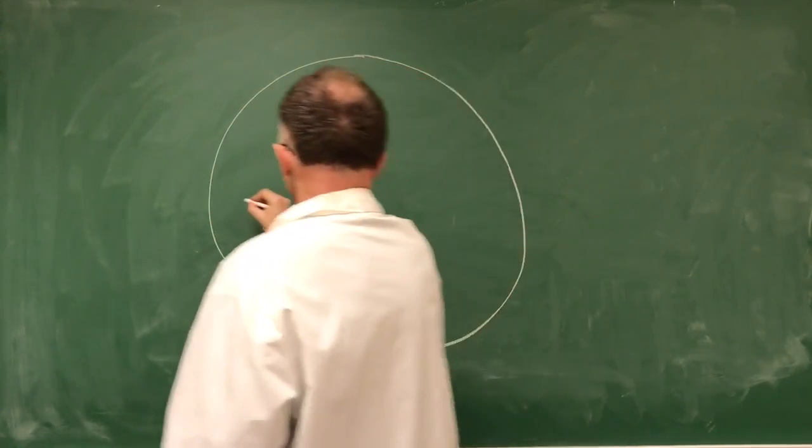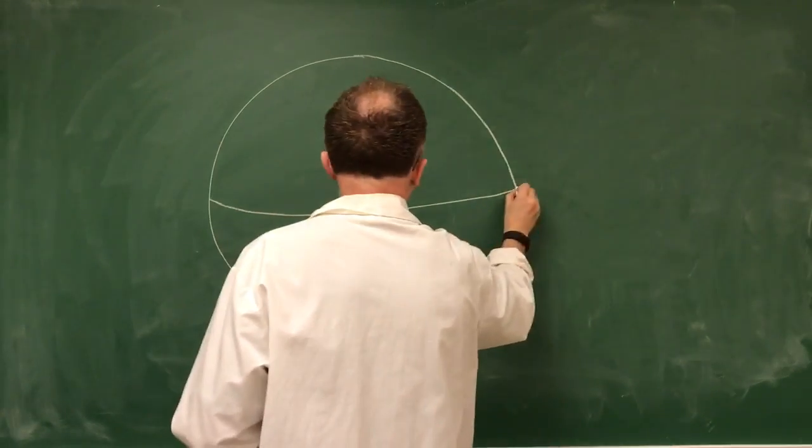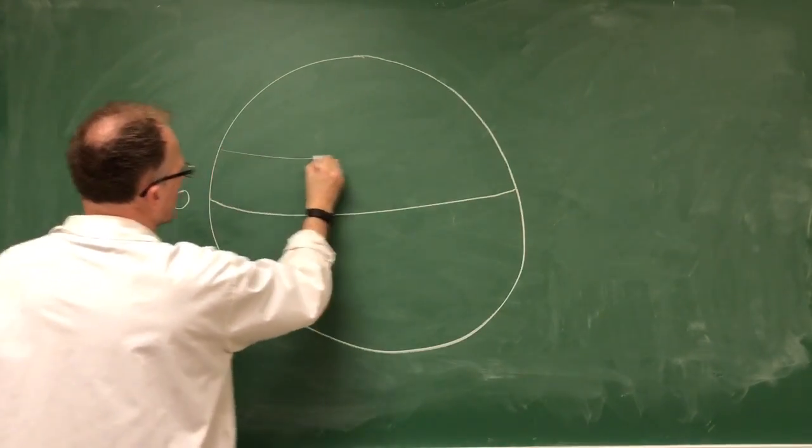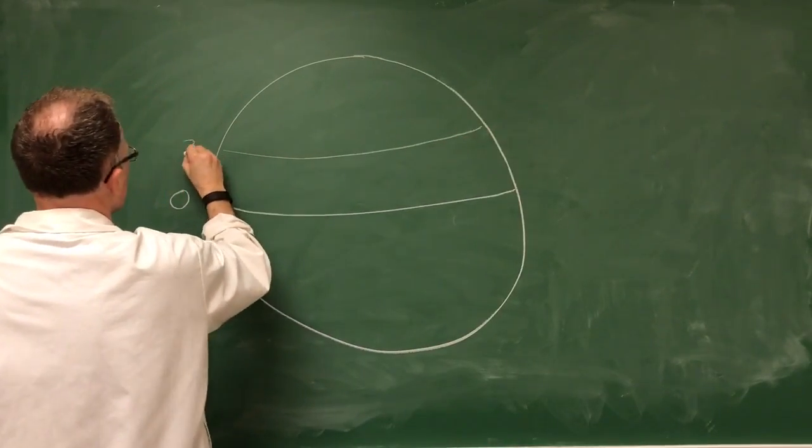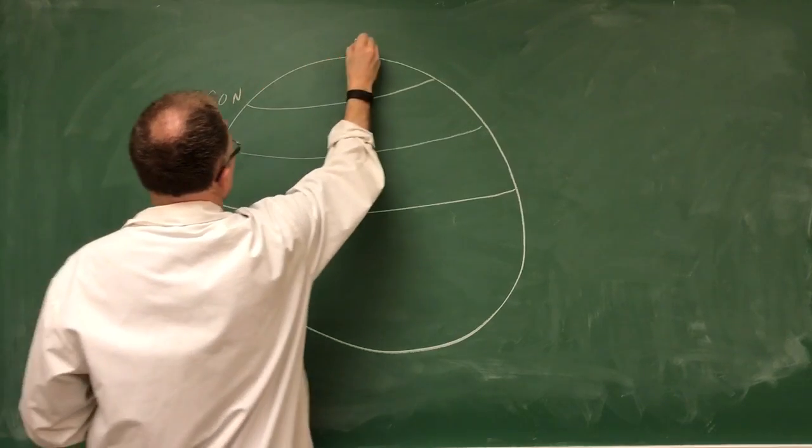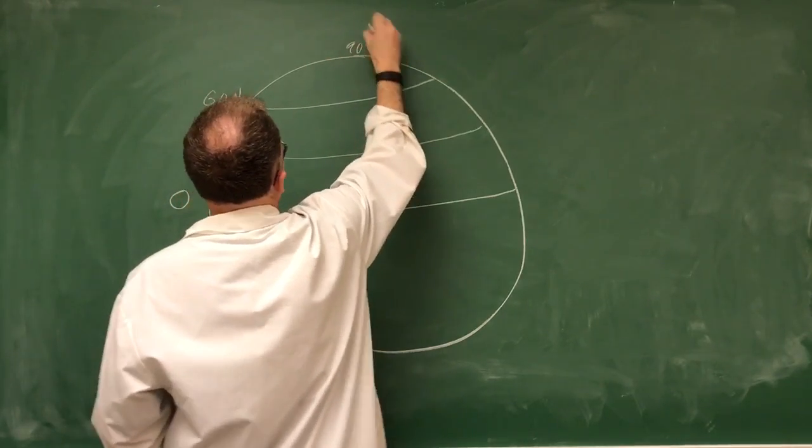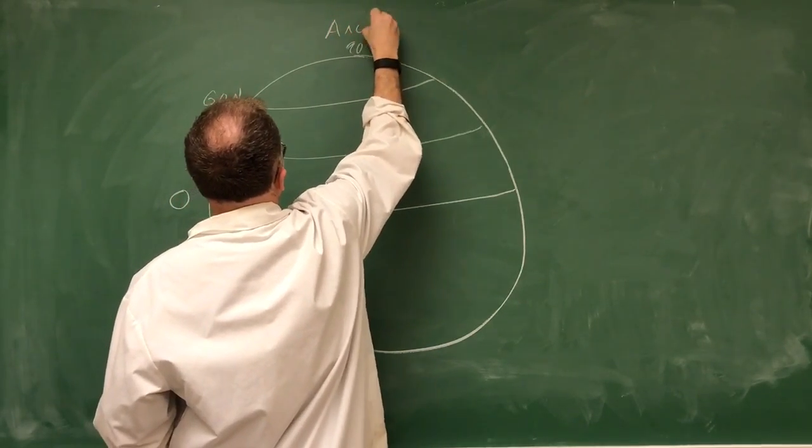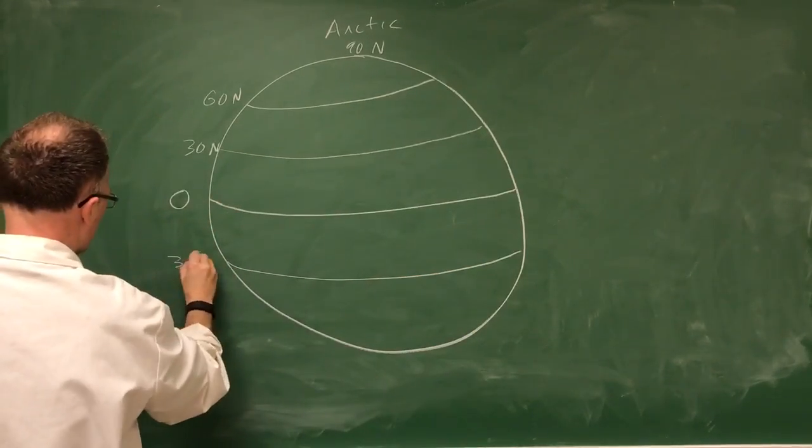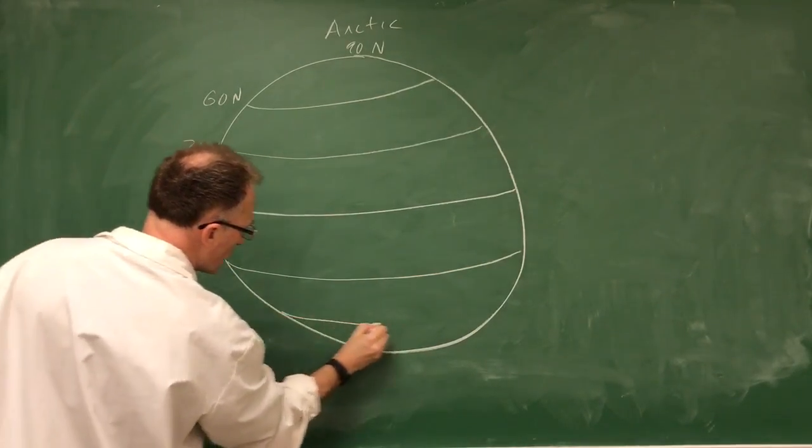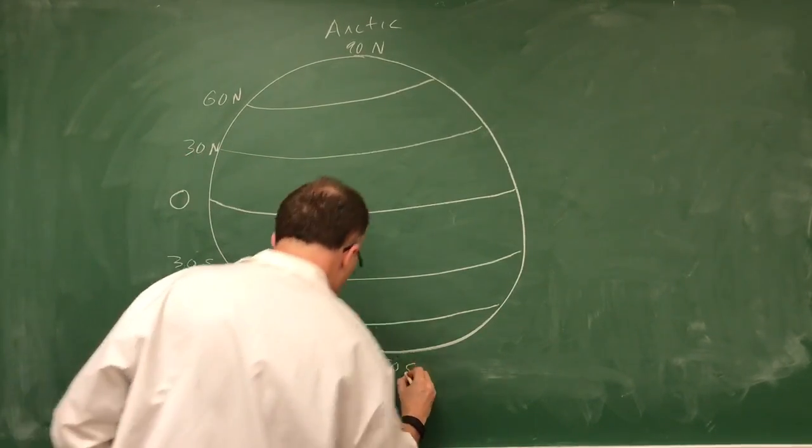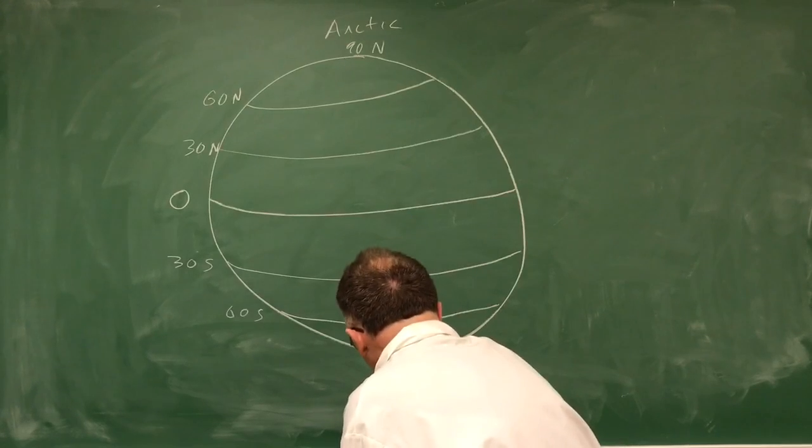So this is looking at the Earth, this is the zero degree equatorial line. I'll draw the 30 degree north, 60 degree north, and this is 90 degrees north, which is the Arctic. And let's go down the other way, so this is 30 south, 60 degrees south, and 90 south. So this is Antarctica.